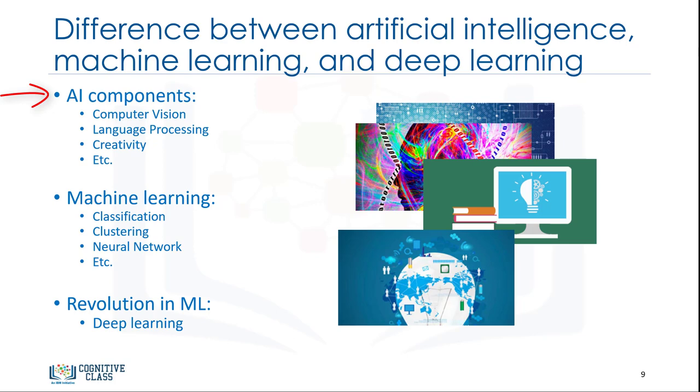In brief, AI tries to make computers intelligent in order to mimic the cognitive functions of humans. So, artificial intelligence is a general field with a broad scope, including computer vision, language processing, creativity, and summarization.